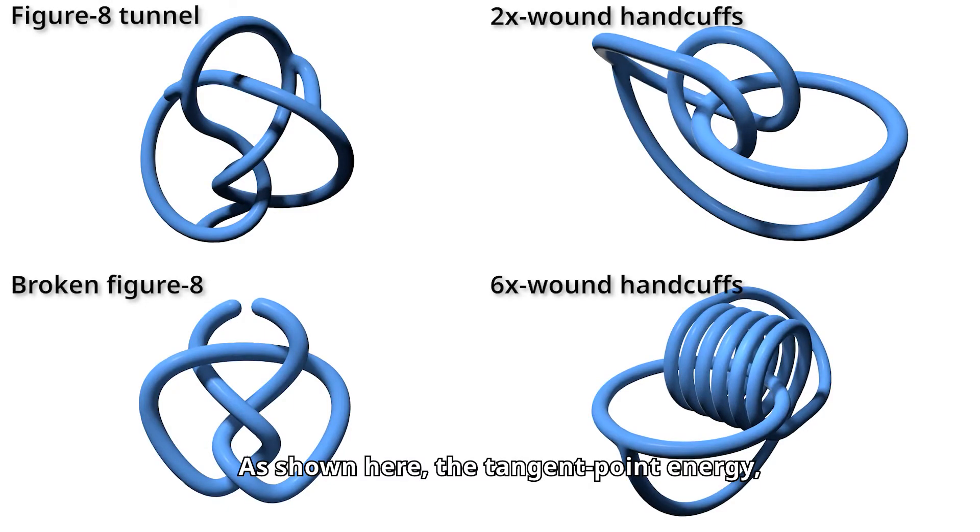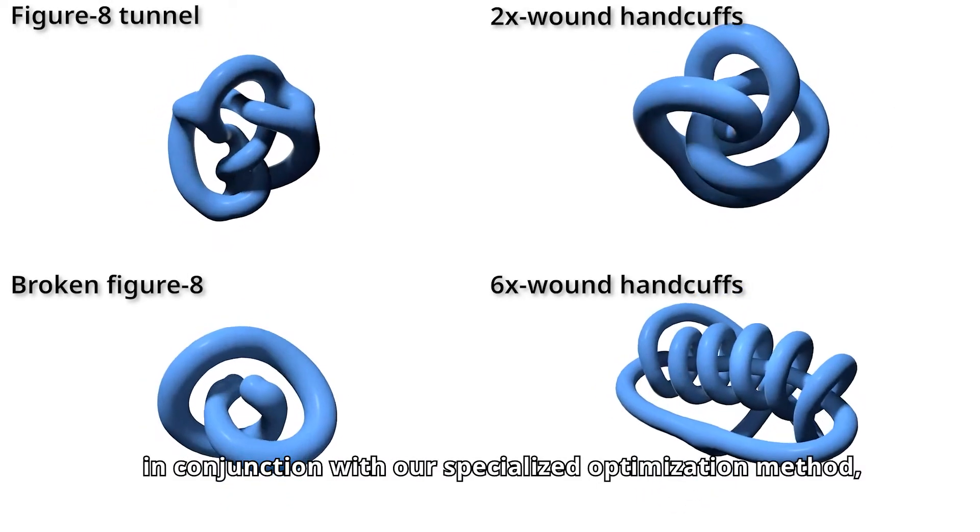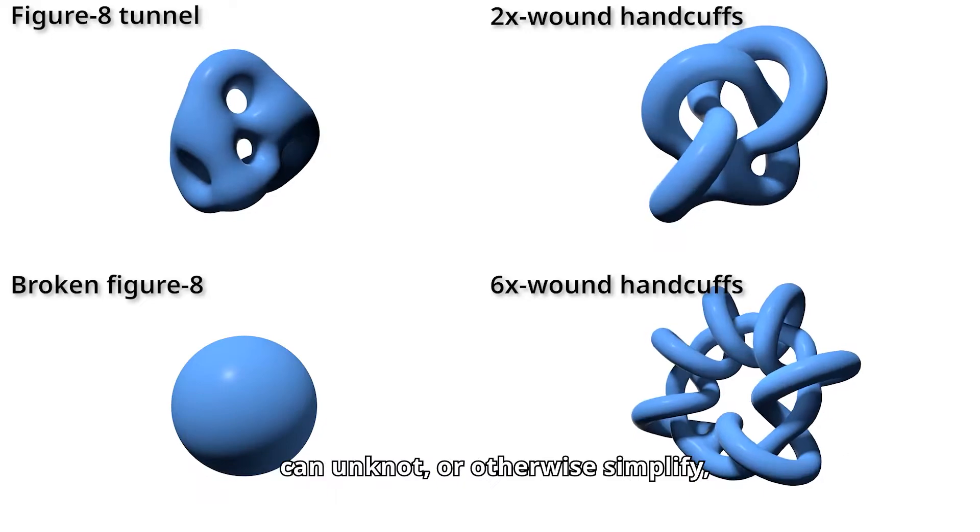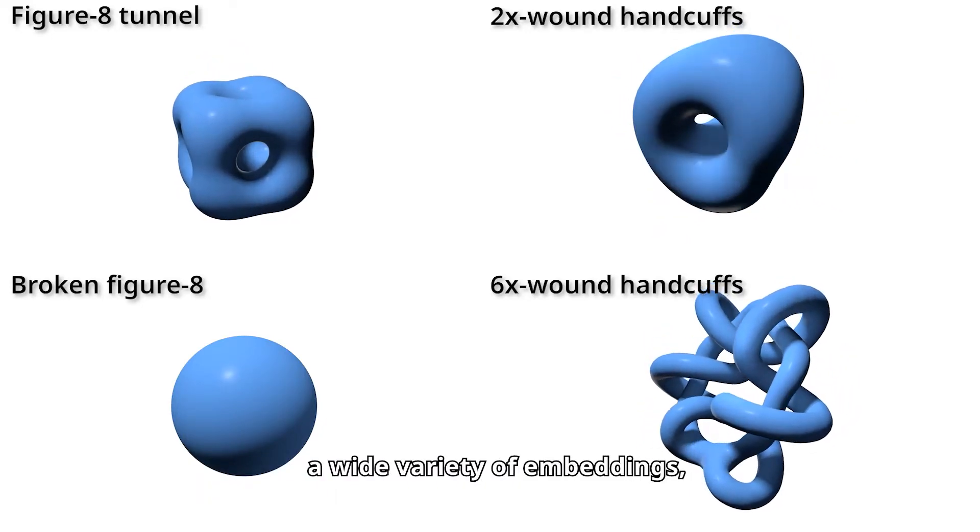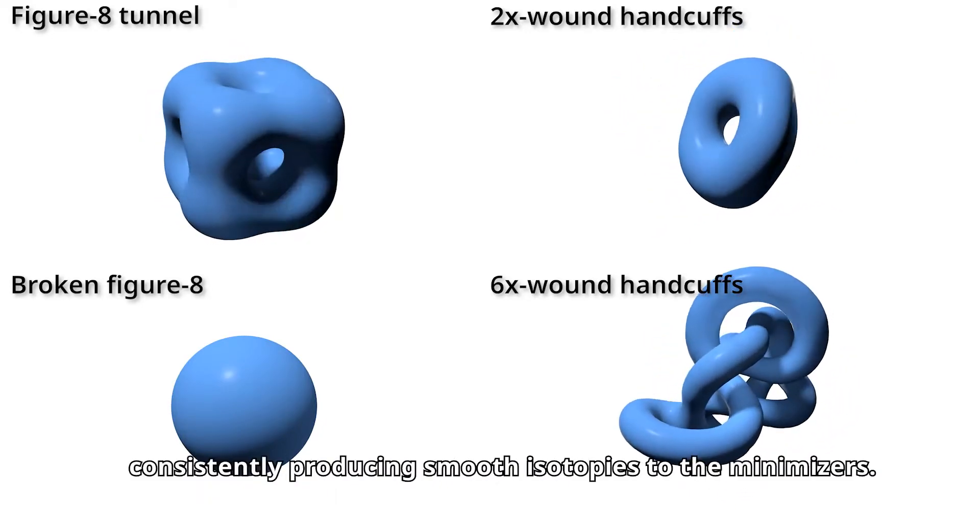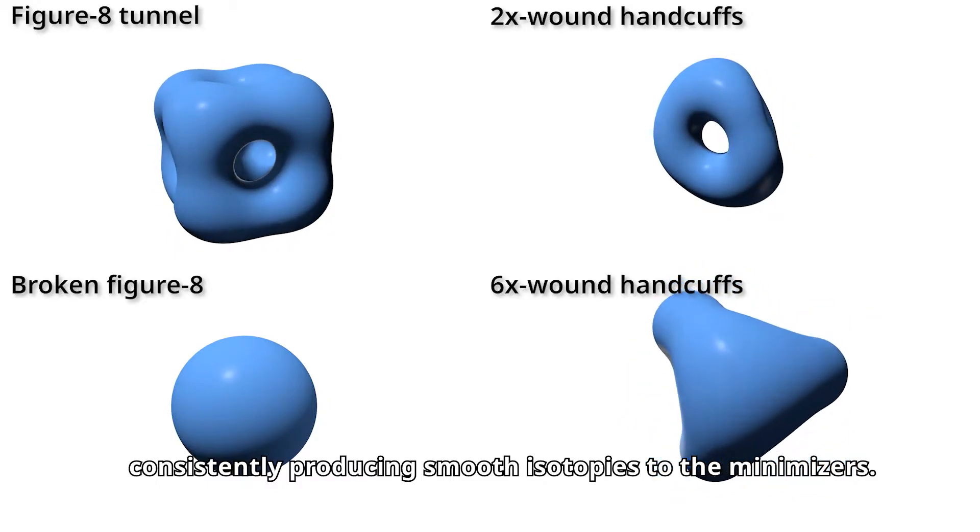As shown here, the tangent point energy, in conjunction with our specialized optimization method, can unknot or otherwise simplify a wide variety of embeddings, consistently producing smooth isotopies to the minimizers.